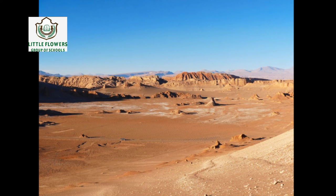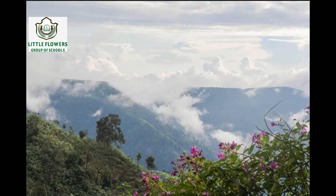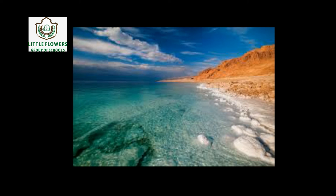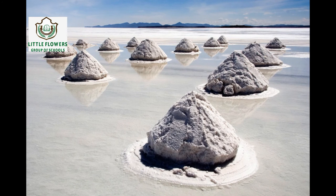Chimborazo — you must learn the spelling carefully: C-H-I-M-B-O-R-A-Z-O. Number six: it is the driest place in the world. The answer is the Atacama Desert. Number seven: it is the wettest place on Earth. The answer is Mawsynram, which is in Meghalaya, India. Number eight: it is the lowest point on the Earth's surface, located between Jordan and Israel. The answer is the Dead Sea.